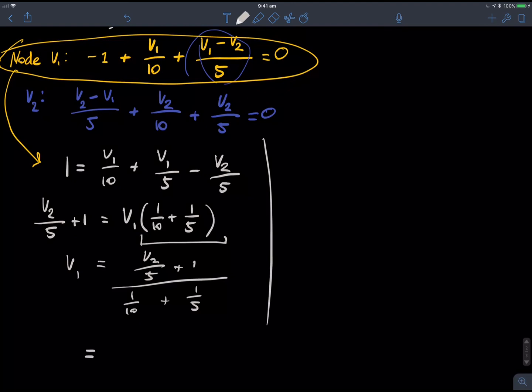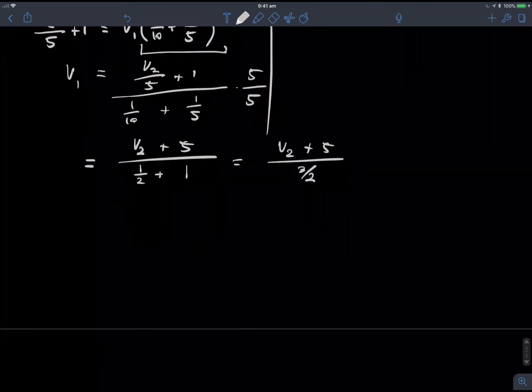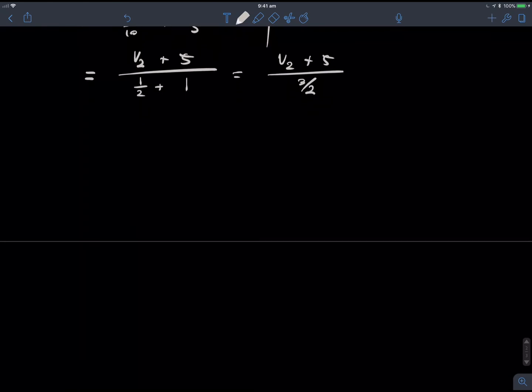Actually, I'm going to times both sides of that fraction by 5. So, it'll be V2... What I'm doing here is timesing by 5 on 5. So, it's effectively timesing it by 1. So, I get V2 plus 5 over 1 half plus 1. And that is the same as V2 plus 5 on 3 halves. Okay. So, this is what V1 is equal to.